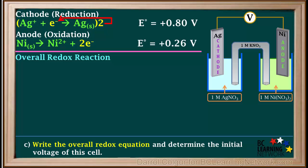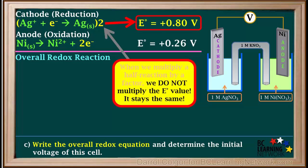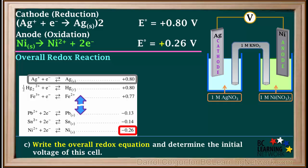Now we have two electrons gained by the Ag⁺ ions and two electrons lost by the nickel atoms, so electrons are now balanced. It is very important to know that when we multiply a half reaction by a factor like two, we do not multiply the E⁰ value. It stays the same. Voltage is the energy per electron; doubling the number of electrons does not change the energy possessed by each electron. The only way we alter an E⁰ value is by switching its sign when the half reaction is reversed.